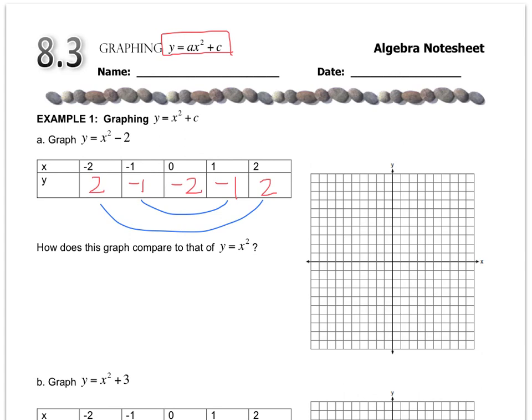So let's plot our points. Negative 2, 2. Negative 1, negative 1. 0, negative 2. 1, negative 1. And 2, 2. Connect them. Make a nice U shape.